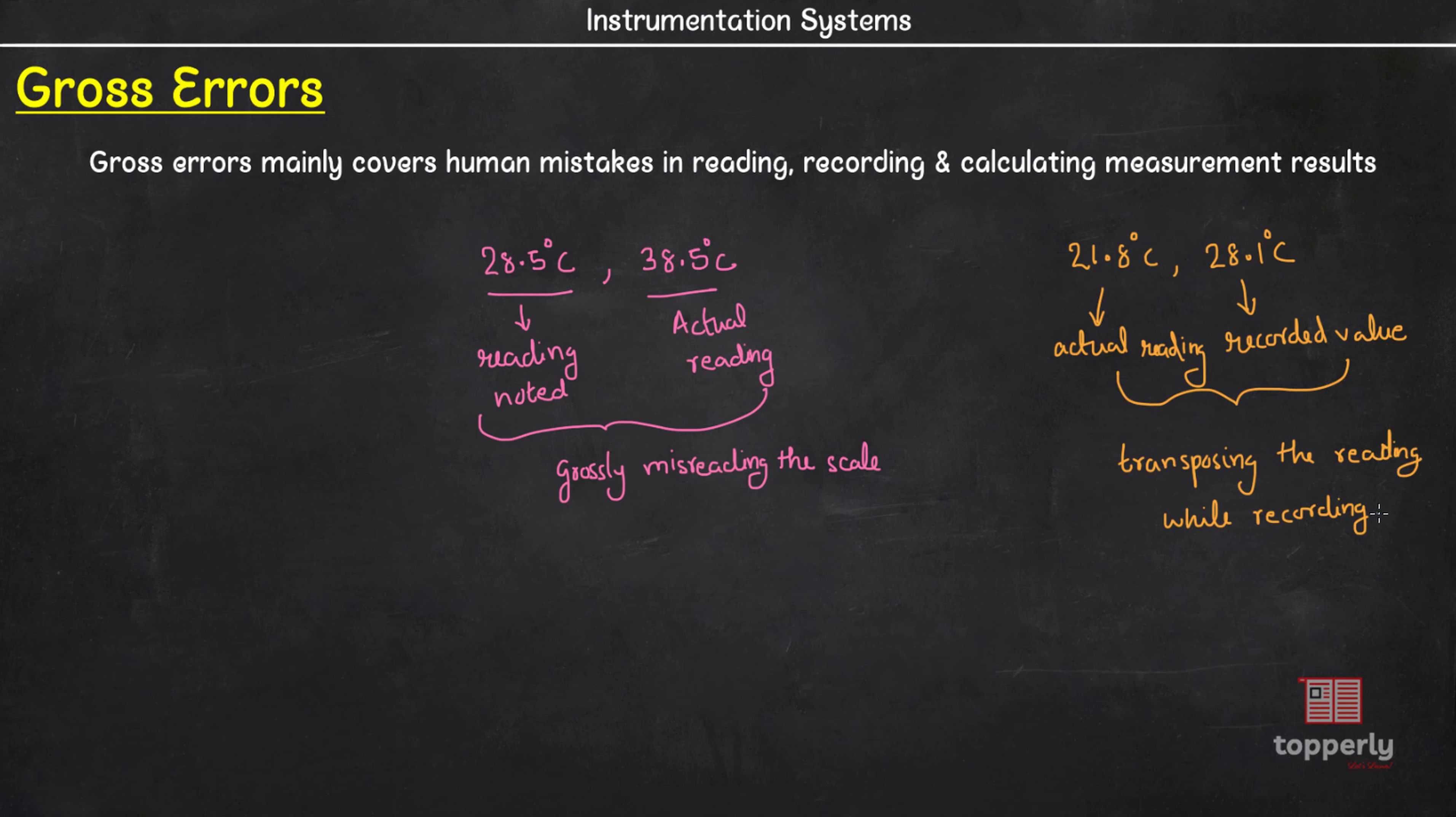So this particular example is a case of transposing the reading while recording. Another example is when we are calculating the resistance using ammeter and voltmeter. So we get resistance R equals voltmeter reading by ammeter reading. If we make an error in this division, then also we get a gross error. This is a case of error caused due to mistake in calculation.